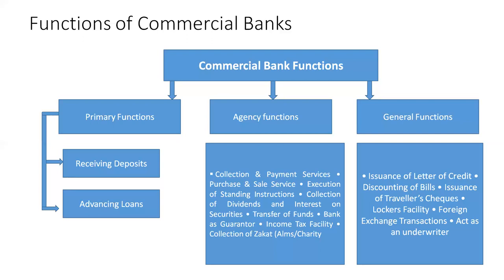You can also pay income tax through the banker. Collection of alms and charities on your behalf is another service — many trusts open an account with the banker and the transaction ID is distributed so anyone from the country can deposit money and the banker collects it for the charity organization. For example, recently for COVID, the Prime Minister opened a charity account, the account number was distributed, and any person — even contributing 10 rupees — could pay it to any bank, and that amount was collected on behalf of the government for helping COVID patients.